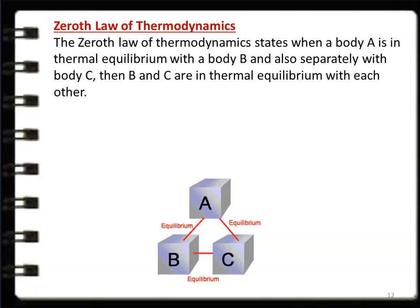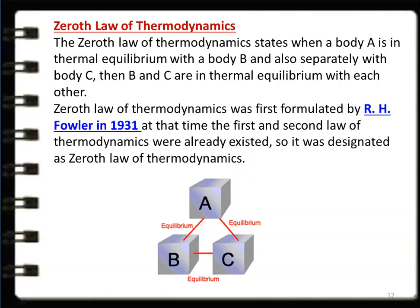All three systems are at equal thermal equilibrium. The zeroth law of thermodynamics was first formulated by R.H. Fowler in the year 1931. At that time, the first and second laws of thermodynamics already existed, so this new law was designated as the zeroth law of thermodynamics.